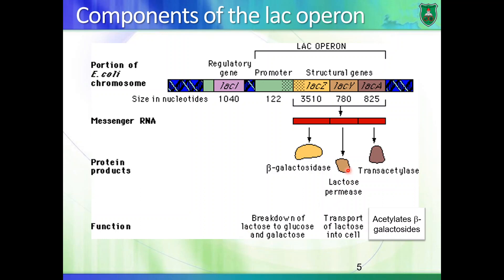Lactose permease is a protein that helps transport lactose into cells. Transacetylase acetylates molecules like beta-galactosidase — meaning it adds an acetyl group to them. We know well the functions of permease and galactosidase, but we don't know much about the function of transacetylase. We will focus particularly on the galactosidase enzyme.